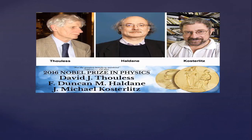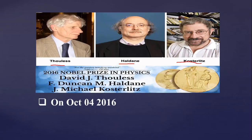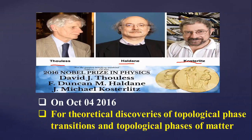The Nobel Prize in Physics 2016 was awarded to three members: David J. Thouless, F. Duncan M. Haldane, and J. Michael Kosterlitz, on 4th October 2016, jointly for theoretical discoveries of topological phase transitions and topological phases of matter. The prize was split into three parts — Thouless received one half and Haldane received one quarter.